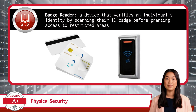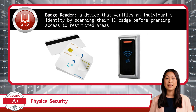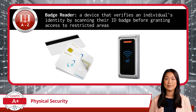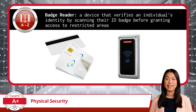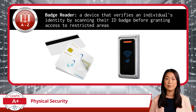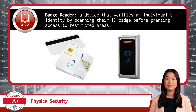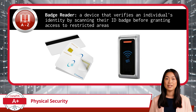Next on the list is the badge reader. This handy device verifies an individual's identity by scanning their ID badge before granting access to restricted areas. It's quick and efficient, and logs every entry and exit. If something goes wrong, you'll have a record of who was where and when, which is vital for both security and accountability. However, one downside is that a badge can be stolen or lost, potentially allowing unauthorized access. This is why it's important to have additional layers of security to complement the use of badge readers.